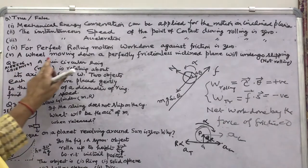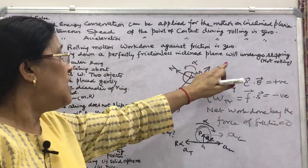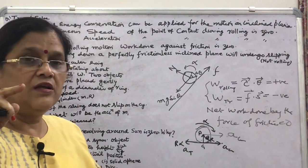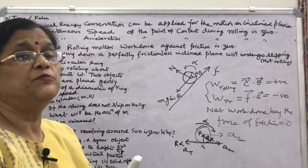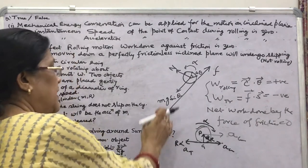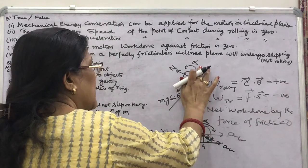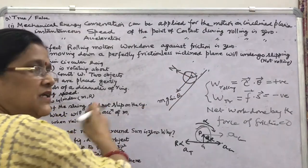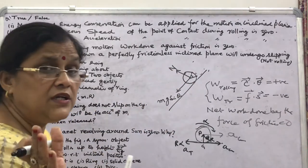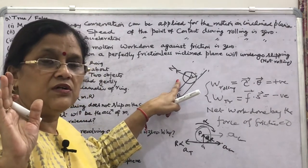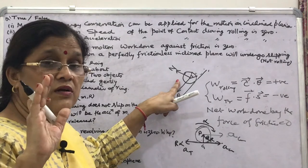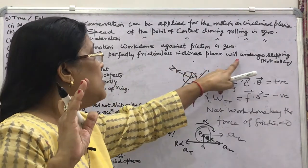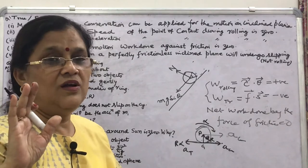The fifth part: a wheel moving down a perfectly frictionless inclined plane will undergo slipping, not rolling. If the plane is smooth with no friction, only Mg sin θ provides acceleration, causing only translational motion — no rolling. The wheel will slip and skid down. So yes, a wheel on a frictionless inclined plane undergoes slipping, not rolling. In this way, you select the proper true or false answers.